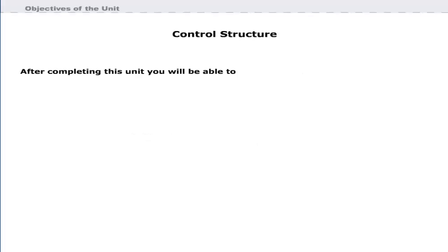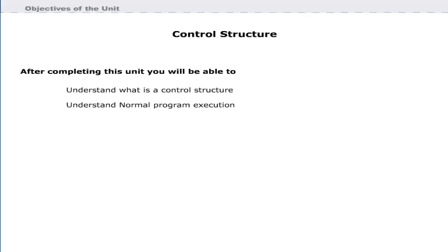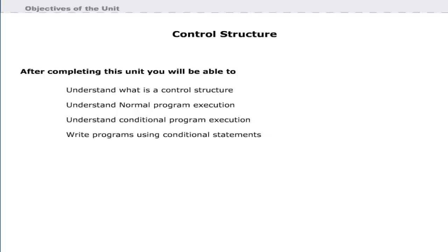After completing this unit, you will be able to understand what a control structure is, understand normal program execution, understand conditional program execution, write programs using conditional statements, and write programs using Java selection and iteration statements.